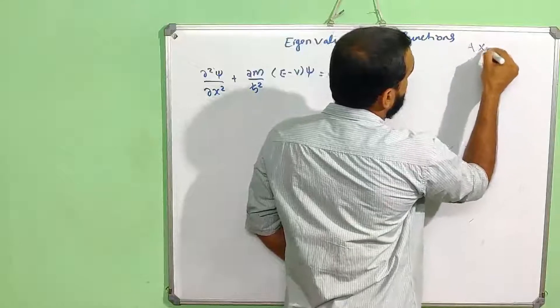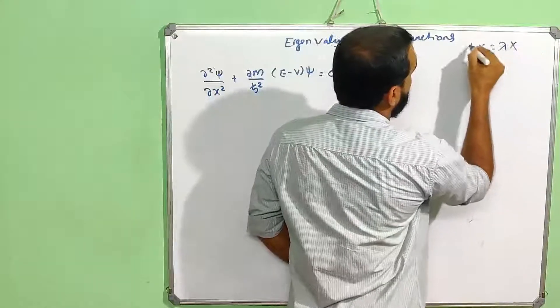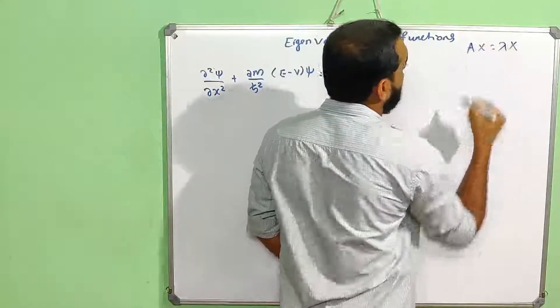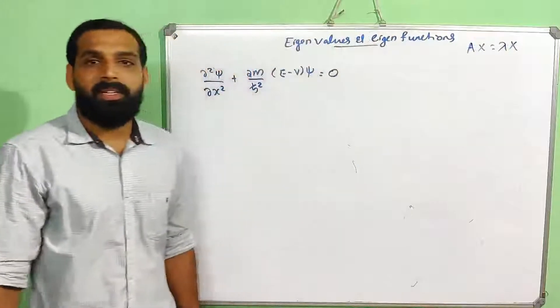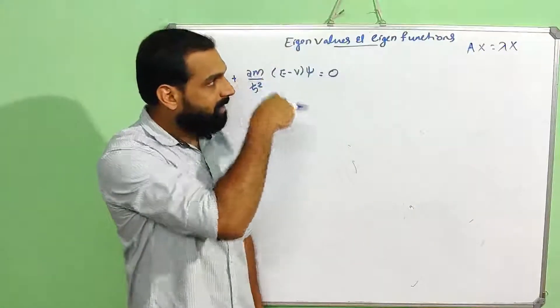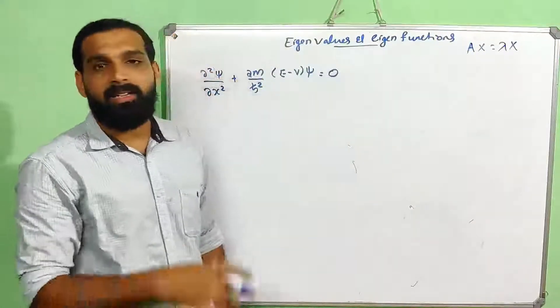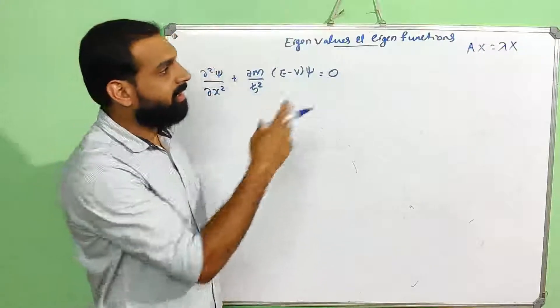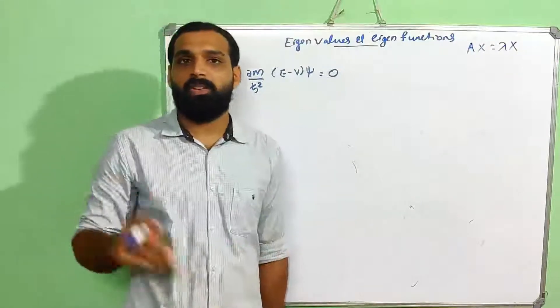Consider the matrix equation AX = λX. A matrix which can be written in the form AX = λX, where X is called the eigenfunction and λ is called the eigenvalue.